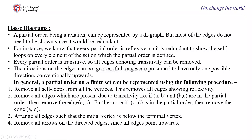A partial order, being a relation, can be represented by a digraph, but most of the edges do not need to be shown since it would be redundant. Since every partial order is reflexive, it is redundant to show the self-loops on every element. Every partial order is also transitive, so all edges denoting transitivity can be removed. Last, the directions on the edges can also be ignored if all edges are presumed to have only one possible direction — conventionally upwards.